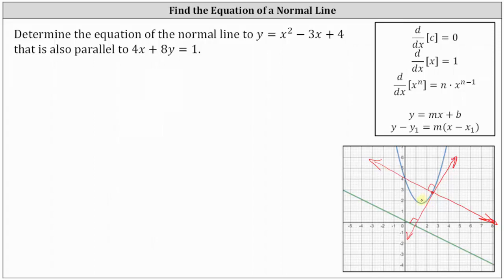To find the equation of the line normal to the curve and also parallel to the given line, we will have to find this point of tangency. To do this, we'll find the derivative of y equals x squared minus 3x plus 4 and set it equal to the slope of the tangent line, which would be the negative reciprocal of the slope of the line given by 4x plus 8y equals 1, because the two lines are perpendicular.